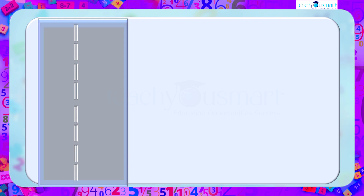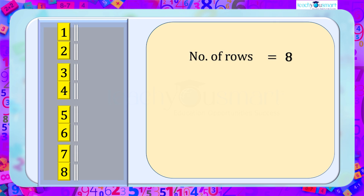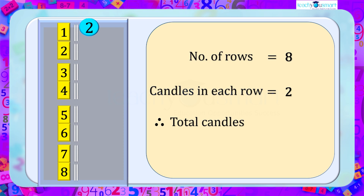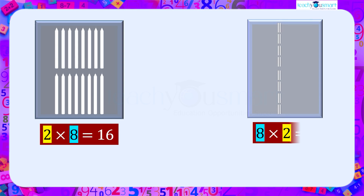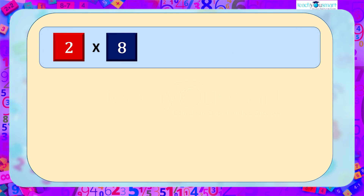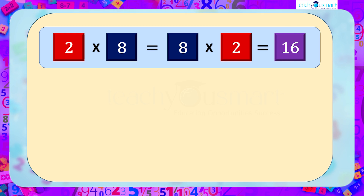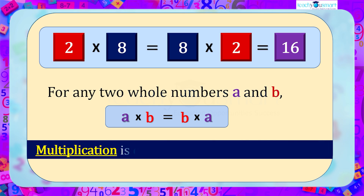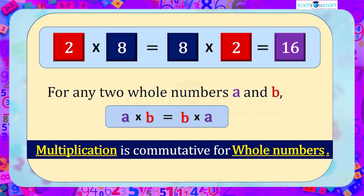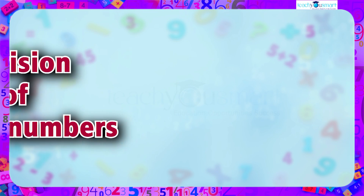What if we arrange these candles in eight rows of two candles each? Again, the total number of candles is eight multiplied by two equals 16. So two multiplied by eight equals eight multiplied by two equals 16. For any two whole numbers a and b, a multiplied by b equals b multiplied by a. That is, multiplication is commutative for whole numbers.